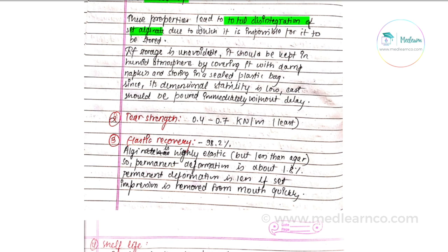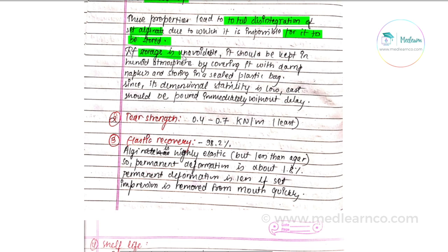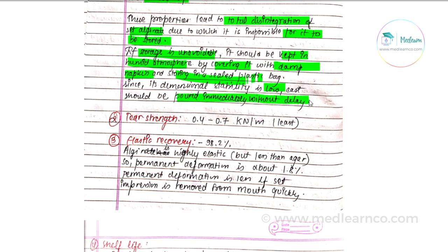Because of these properties, alginate is difficult to store. If storage is unavoidable, it should be kept in a humid atmosphere by covering it with a damp cloth or napkin and stored in a sealed plastic bag. Since dimensional stability is low, the cast should be poured immediately without any delay.